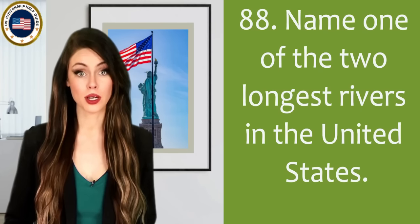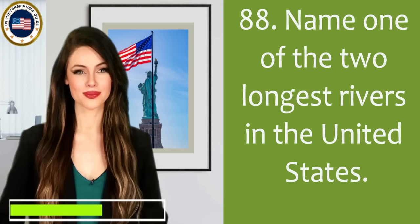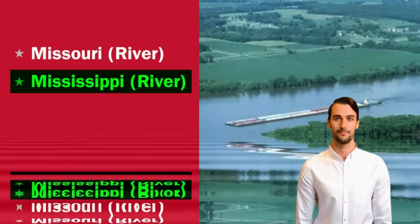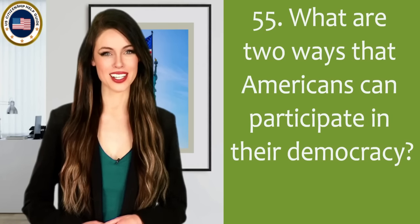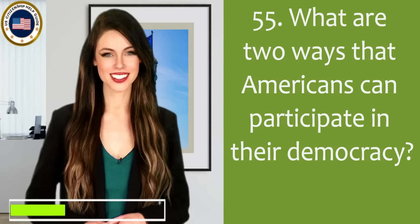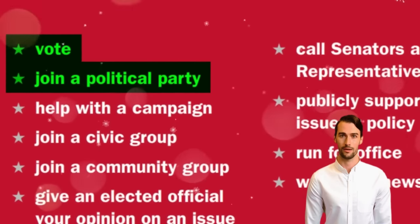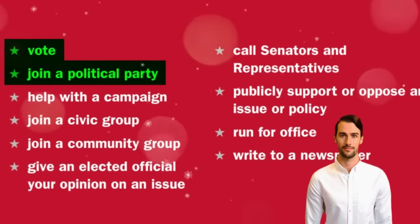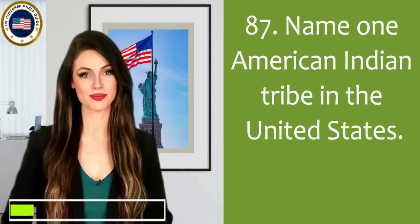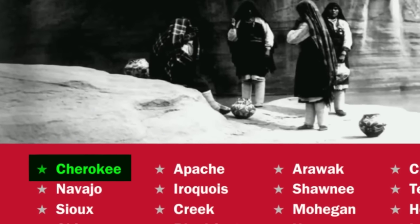Name one of the two longest rivers in the United States. Mississippi River. What are two ways that Americans can participate in their democracy? Vote. Join a political party. Name one American Indian tribe in the United States. Cherokee.